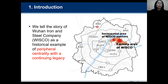This map shows the central district of Wuhan. I think everybody knows Wuhan very well now because of the COVID-19 pandemic. Wuhan is one of the largest metropolises located in central China. The orange or brown here shows the location of Wisco in the Qingshan district, in what used to be a western suburb of Wuhan.